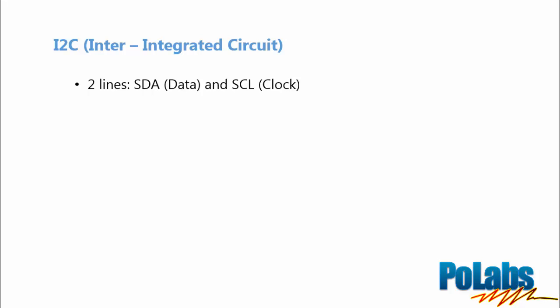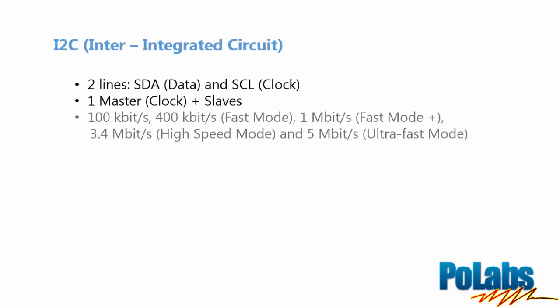Inter-integrated circuits simplifies the hardware part of electronic devices. It consists of only two wires — one is used for clock synchronization, the other one is for data transfer purposes. On each I2C bus you will find one master and multiple slaves.